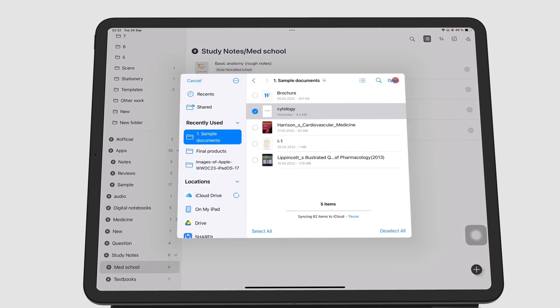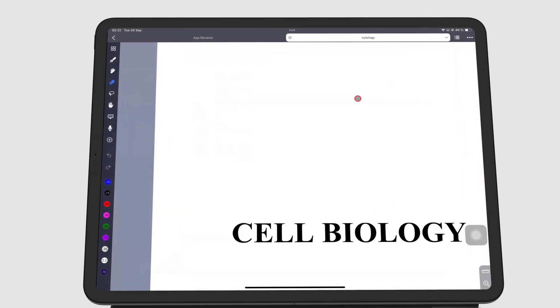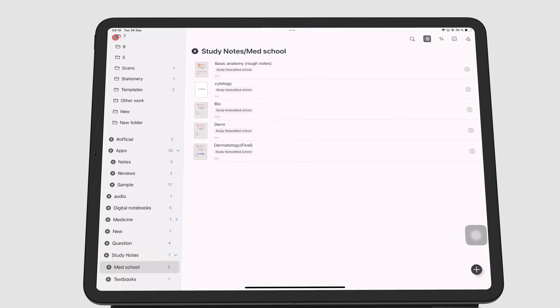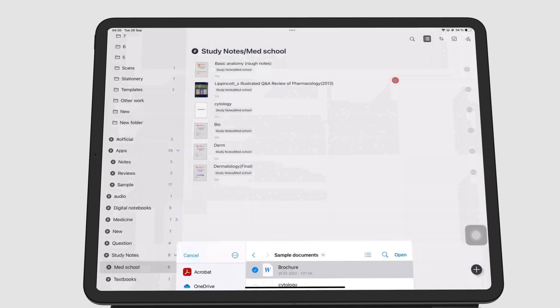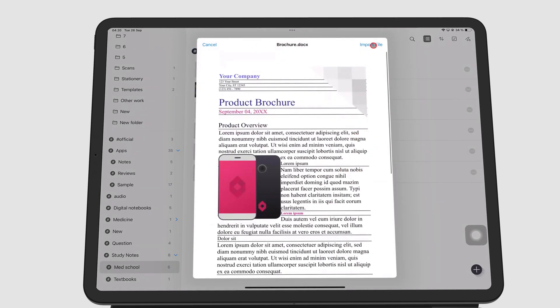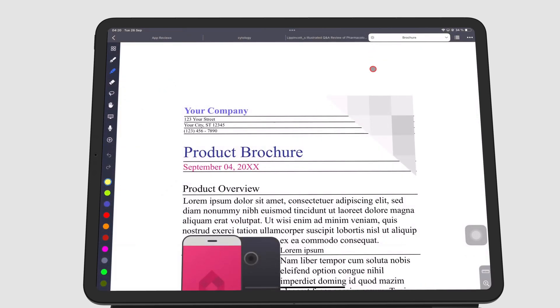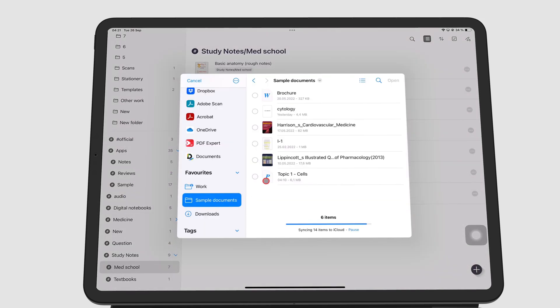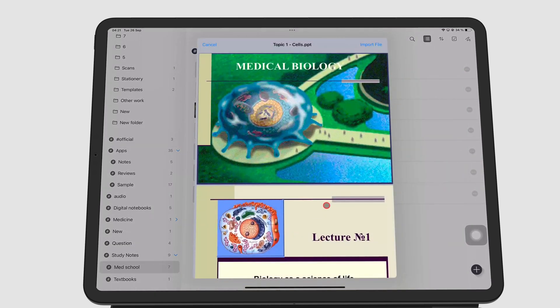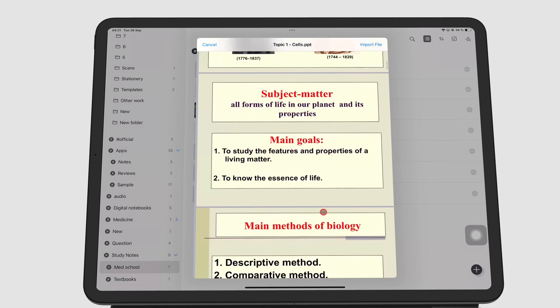You can import a native PDF or a scan. The app also lets you add Word and PowerPoint documents. But it converts them to PDF first before you can start annotating on them.